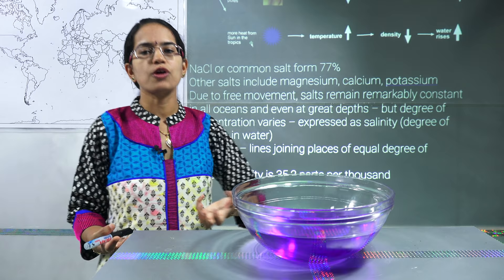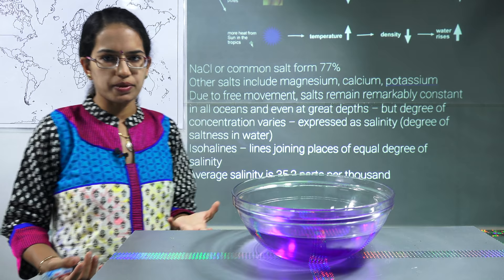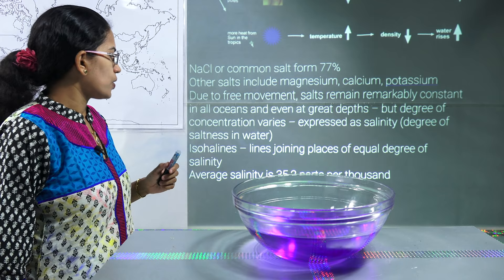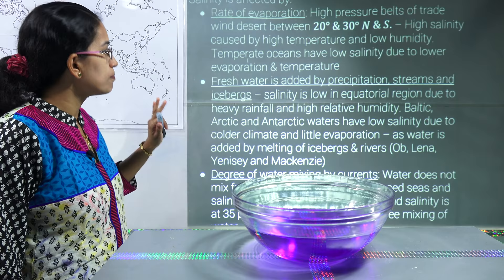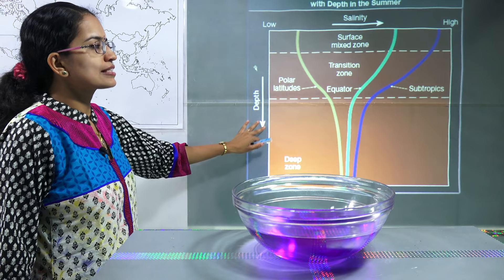Due to high salinity, most people who try to learn swimming there would float, and sinking becomes very difficult. Therefore these are called optimum places for beginners to learn swimming, because there is no probability of drowning. The next important thing we would try to understand is the variation of salinity across the globe.